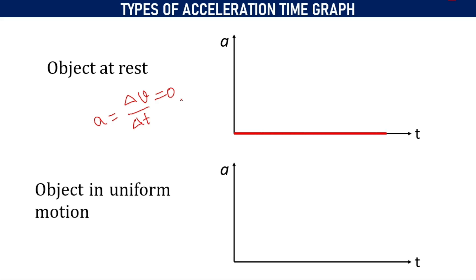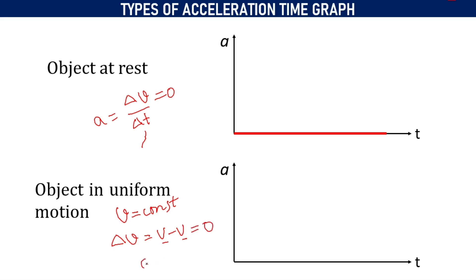Next, we are going to consider an object in uniform motion. We know that in uniform motion, velocity should be constant. When velocity is constant, the change in velocity — represented as v_final minus v_initial — is zero, since initial and final velocity are equal. So delta v is also equal to zero. Again, acceleration will be zero. Hence, for an object in uniform motion, we will get a straight line graph coinciding with the time axis.